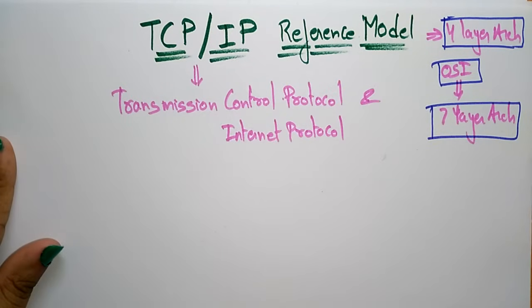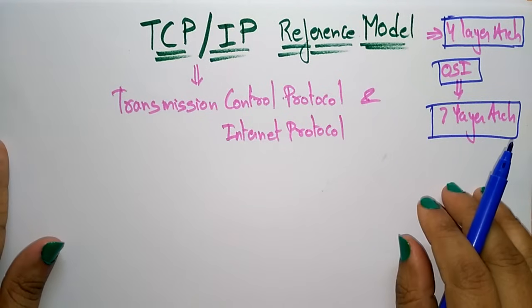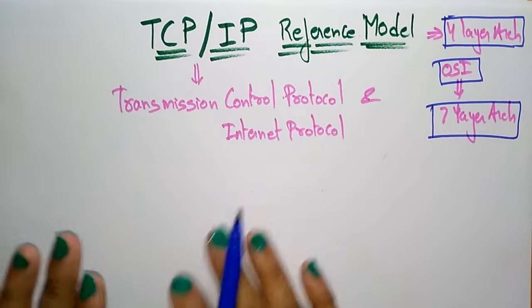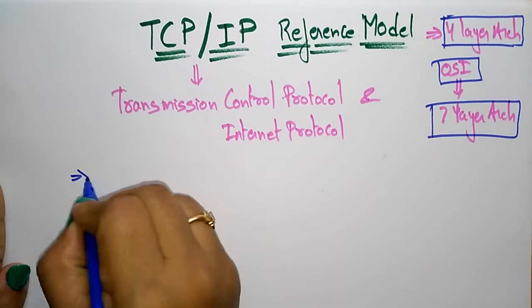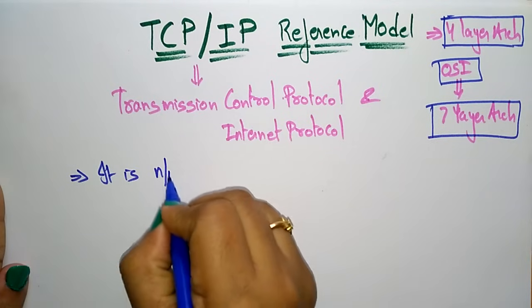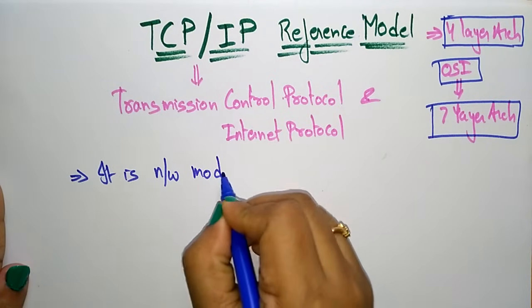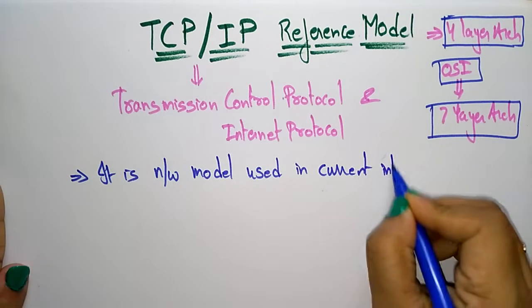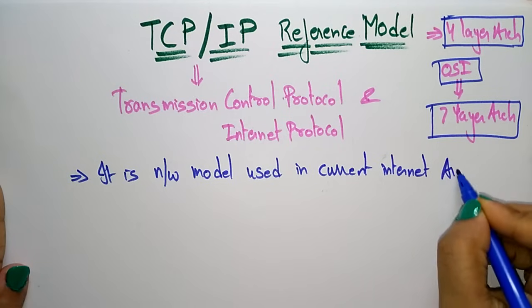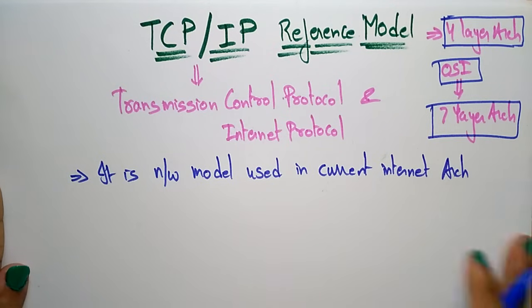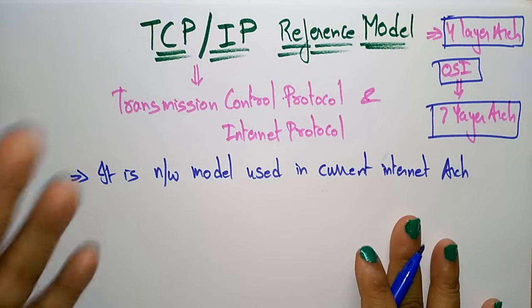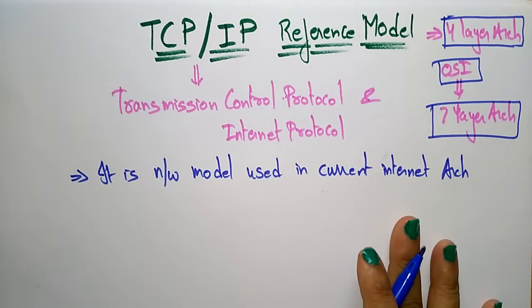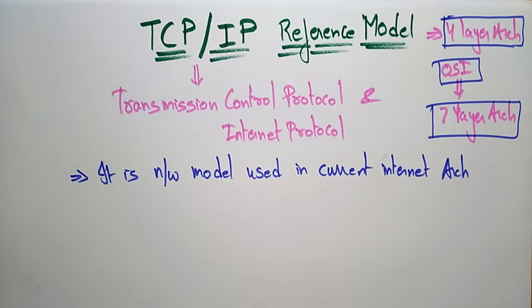Why are we using this TCP/IP reference model? It is a network model used in the current internet architecture. Nowadays, whatever internet architectures we are using, those refer to this TCP/IP reference model rather than the OSI reference model. It was actually developed by the Department of Defense project research agency.